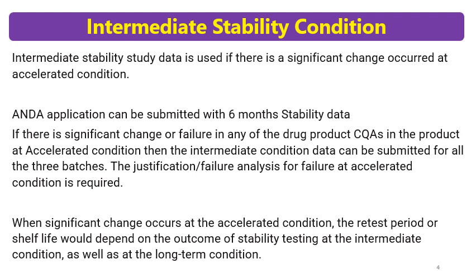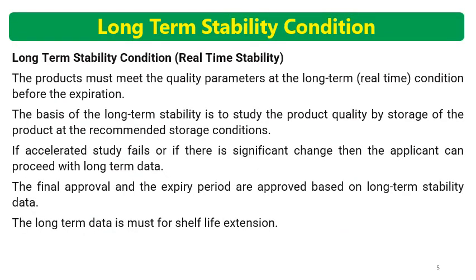This data is required for all three batches. Along with the accelerated data, intermediate data is submitted, and a justification or failure analysis is required for the failure at accelerated condition. When a significant change occurs at accelerated condition, the retest period or shelf life will depend on the outcome of stability testing at both the intermediate and long-term conditions. As per ICH guidelines, intermediate condition data is used when there is a significant change at accelerated condition — this is the main importance of intermediate data.